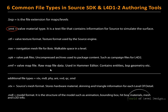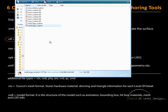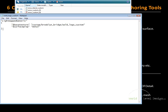Next is VMT. VMT and VTF go hand in hand. VMT is the Valve Material Type — a text file that contains all the information for Source to simulate the surface of your textures. Here are VMT files I have on my system. If I open one up with Notepad, this is a text file that references the texture and the surface property.